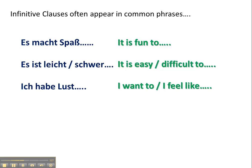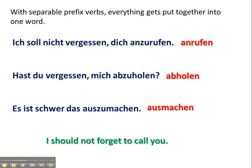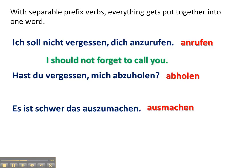With separable prefix verbs, everything gets put together into one word and the 'zu' is normally stuck in the middle, after the separable prefix. So for example, 'anrufen' becomes 'anzurufen.' 'Ich soll nicht vergessen dich anzurufen.' 'Hast du vergessen mich abzuholen?' Or 'es ist schwer das auszumachen.'